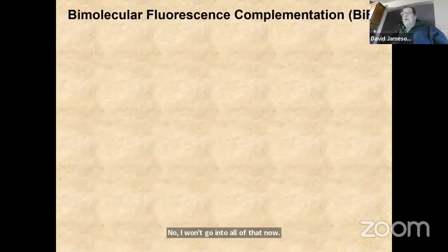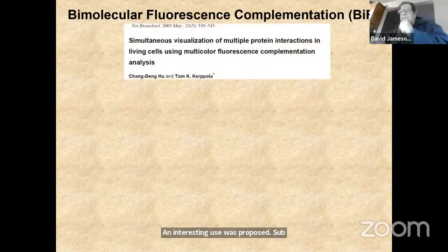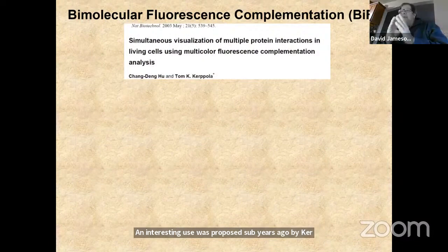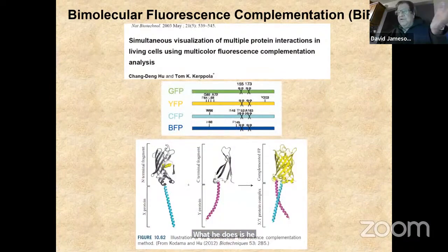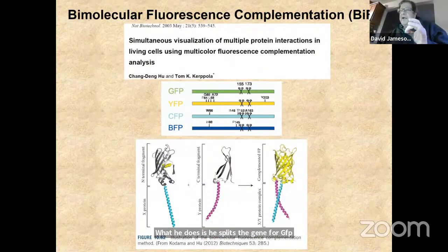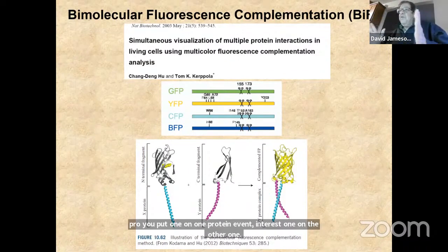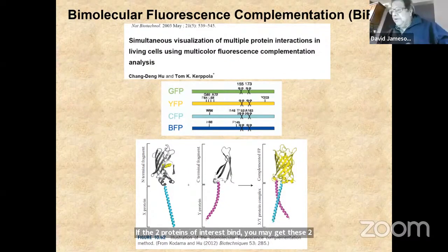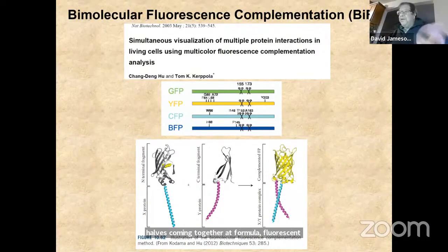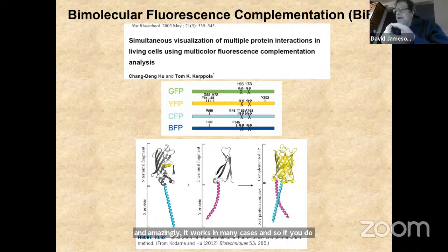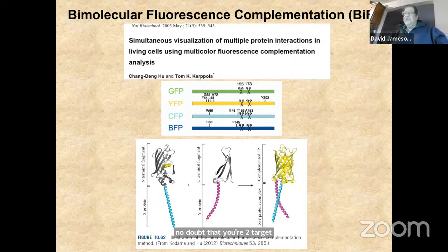An interesting use proposed by Kerppola is bimolecular fluorescence complementation. He splits the gene for GFP into two parts. If you put one half on one protein of interest and the other half on another, when the two proteins bind, the two halves may come together to form a fluorescent protein. Amazingly, it works in many cases. If you observe a fluorescent protein by this process, it's unambiguous proof that your two target proteins came together.